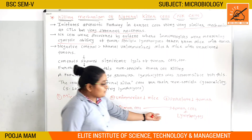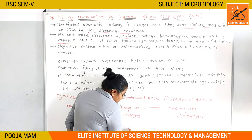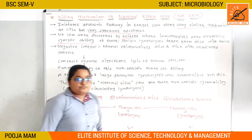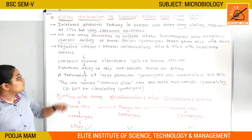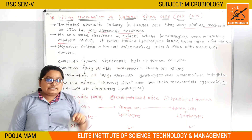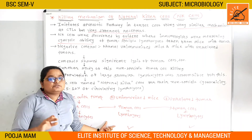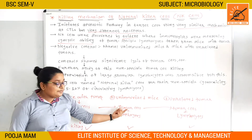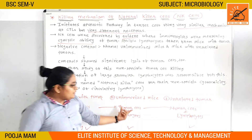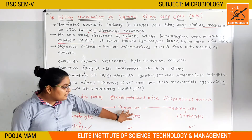Both negative controls also showed a positive result — they were killing tumor cells. The controls showed significant killing of the tumor cells. So the tumor cells are being killed even without prior immunization.